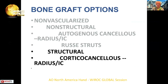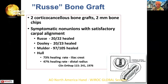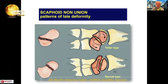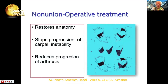Once you start getting cystic changes and a humpback deformity, we find the role of cortical cancellous bone and a volar approach — whether using struts of distal radius or iliac crest, the so-called Russi graft, or a wedge graft taken from the distal radius. Bear in mind that these deformed nonunions, as described by Stephen Viegas, may be a volar type or a dorsal type, which is why CT — as Dr. Blazer said — is critical in analyzing these.